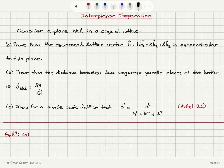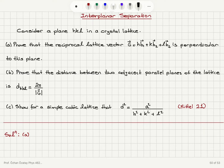Interplanar Separation. Consider a plane hkl in a crystal lattice. Prove that the reciprocal lattice vector hb1 plus kb2 plus lb3 is perpendicular to this plane. Prove that the distance between two adjacent parallel planes of the lattice is 2π divided by the magnitude of the reciprocal lattice vector. Show that for a simple cubic lattice d² equals a² over h² plus k² plus l².